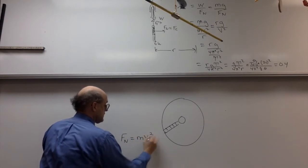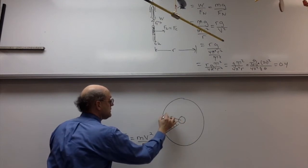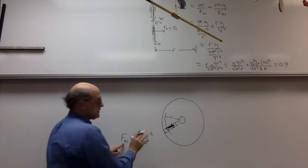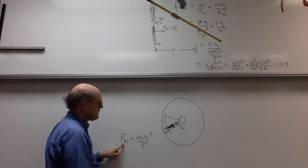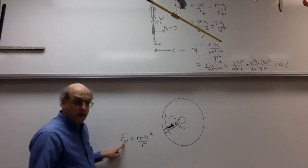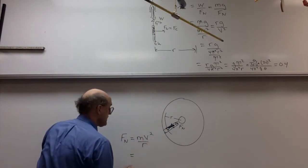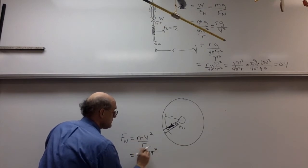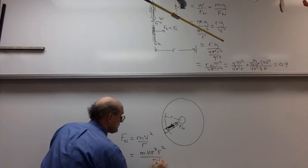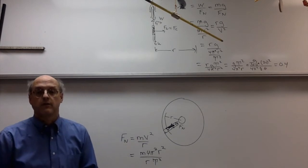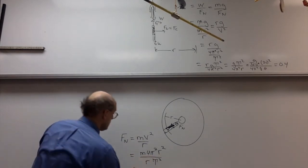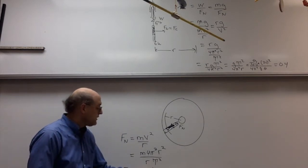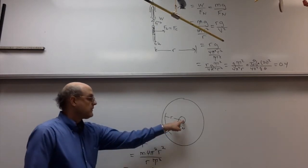We can write F_N = mv²/r, where r is his location on the ladder. The normal force, which acts toward the center of the rotating room, is the centripetal force. Setting that equal to mv²/r, his speed squared at any location is 4π²r²/T². So r cancels one power, and we get F_N = m·4π²r/T². His apparent weight varies directly with his distance from the center of the rotating room.